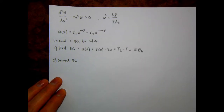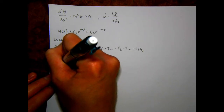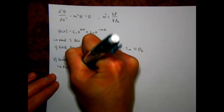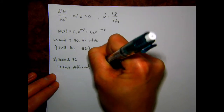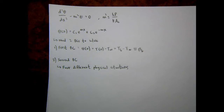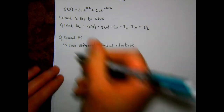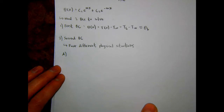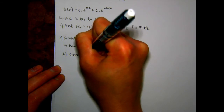We'll consider four different physical situations for the second boundary condition, giving four different solutions for the temperature distribution. The first case — Case A — is the one we're considering for the lab: convection from the tip of the fin.